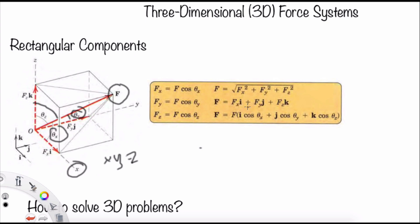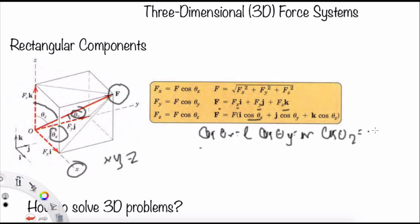If you want to express F in unit vector form, you can write F as Fx·i plus Fy·j plus Fz·k. If you know the angles, you can write F as F(i cos theta x + j cos theta y + k cos theta z). We can also substitute the direction cosines: cos theta x is denoted as l, cos theta y as m, and cos theta z as n.